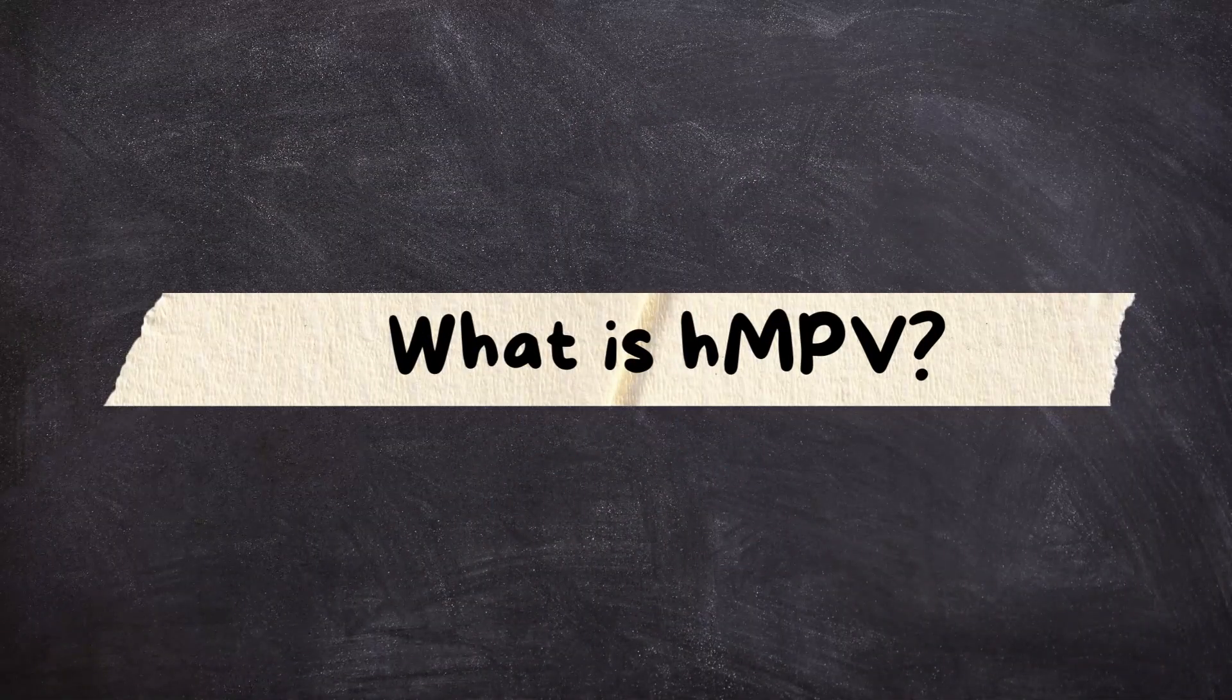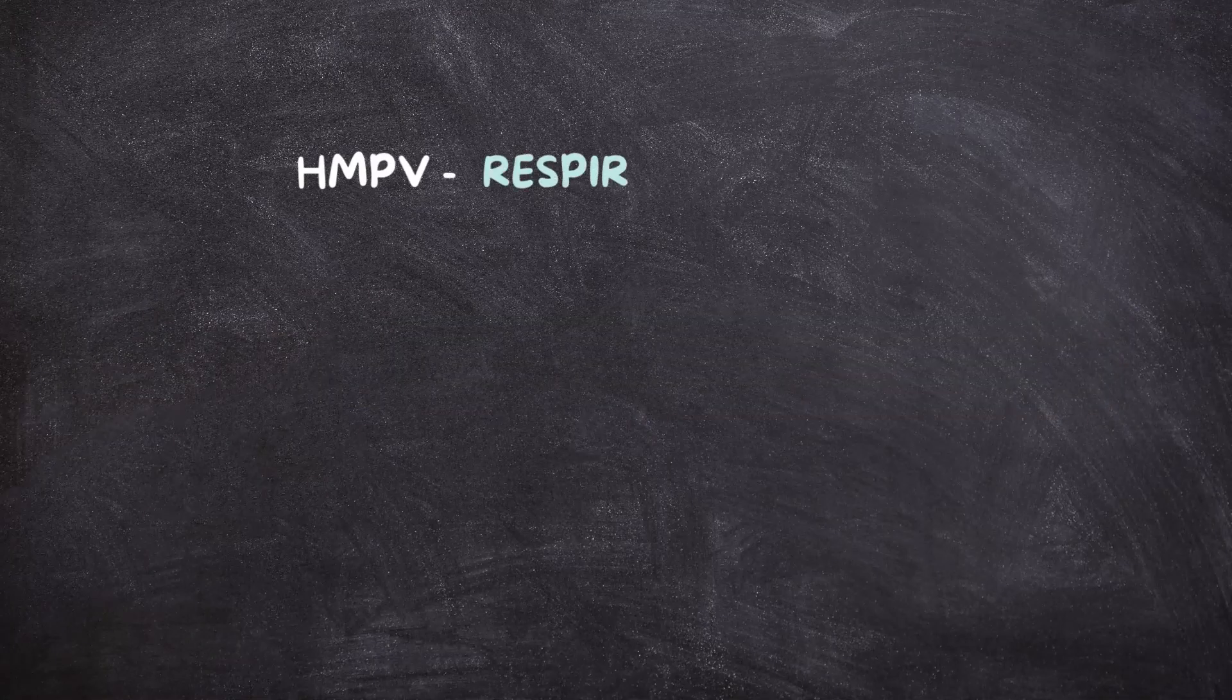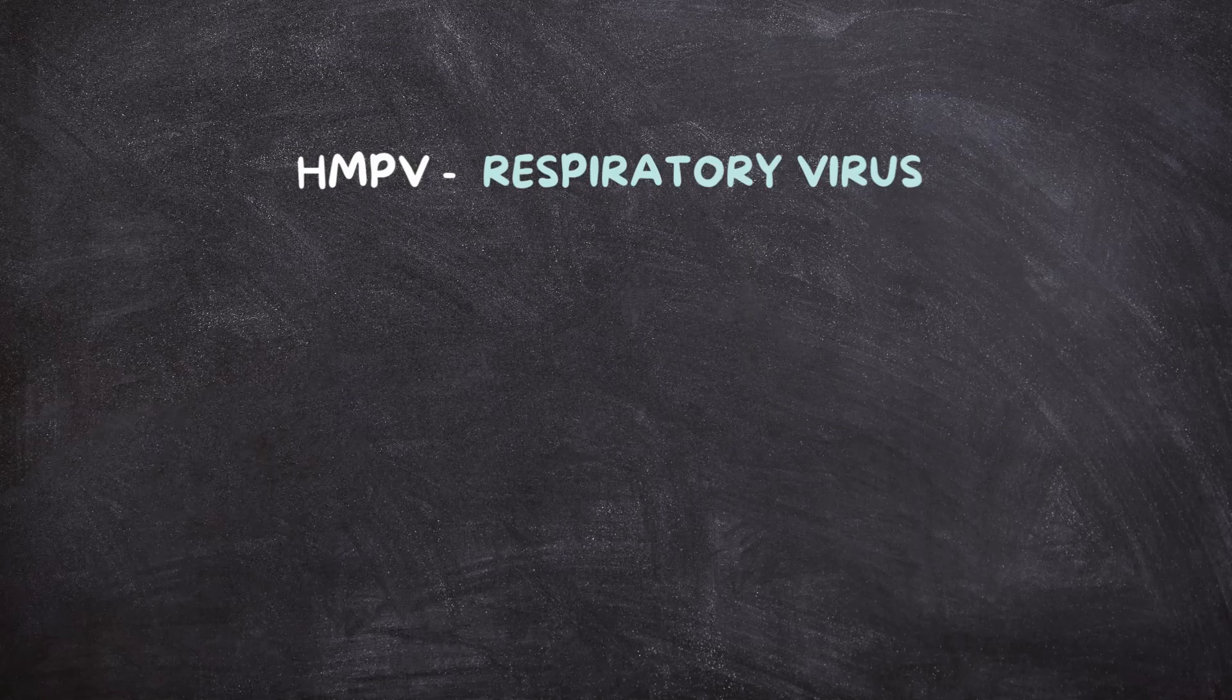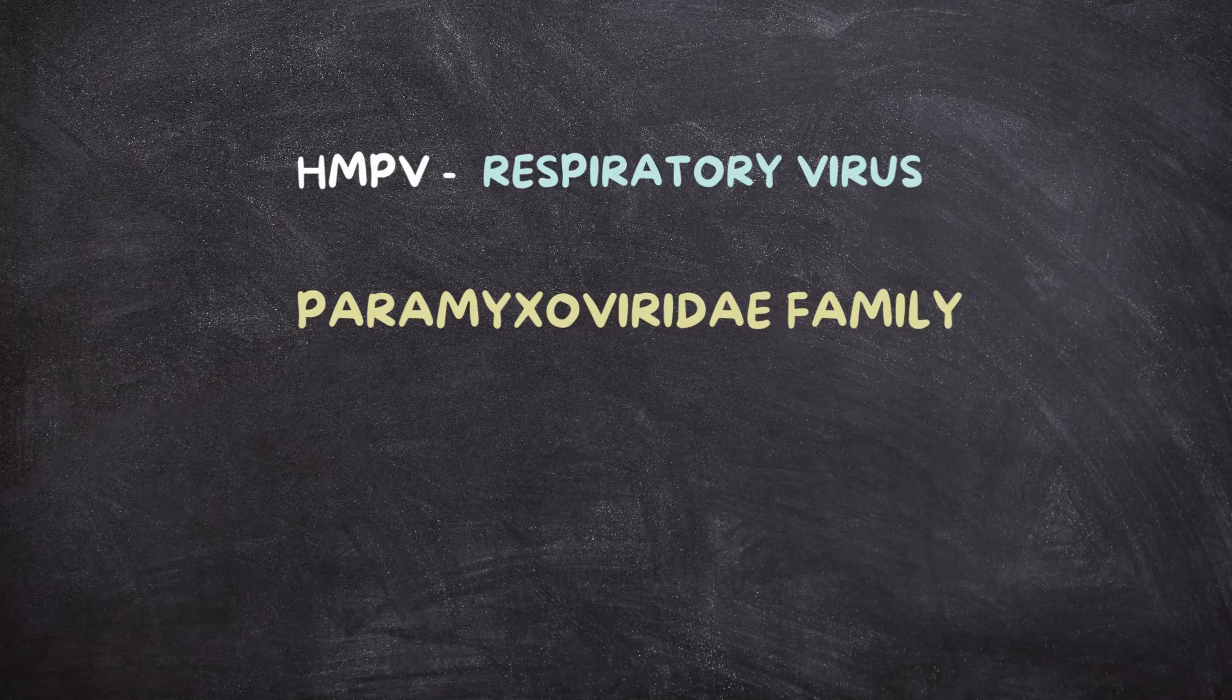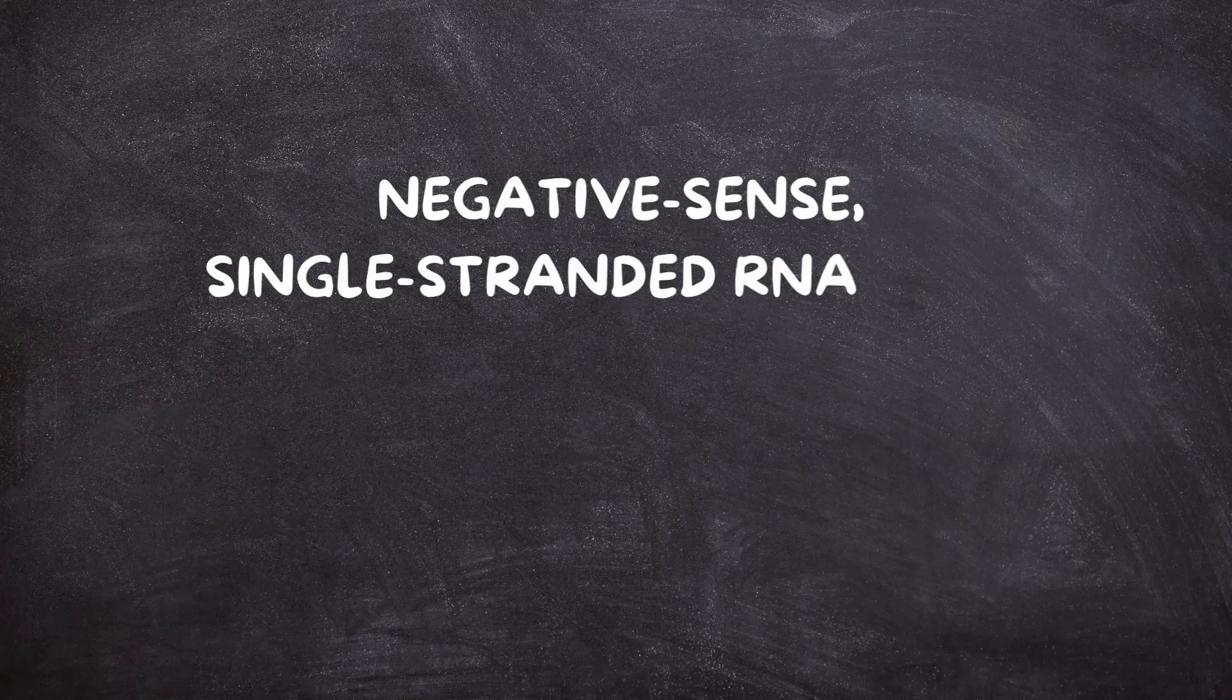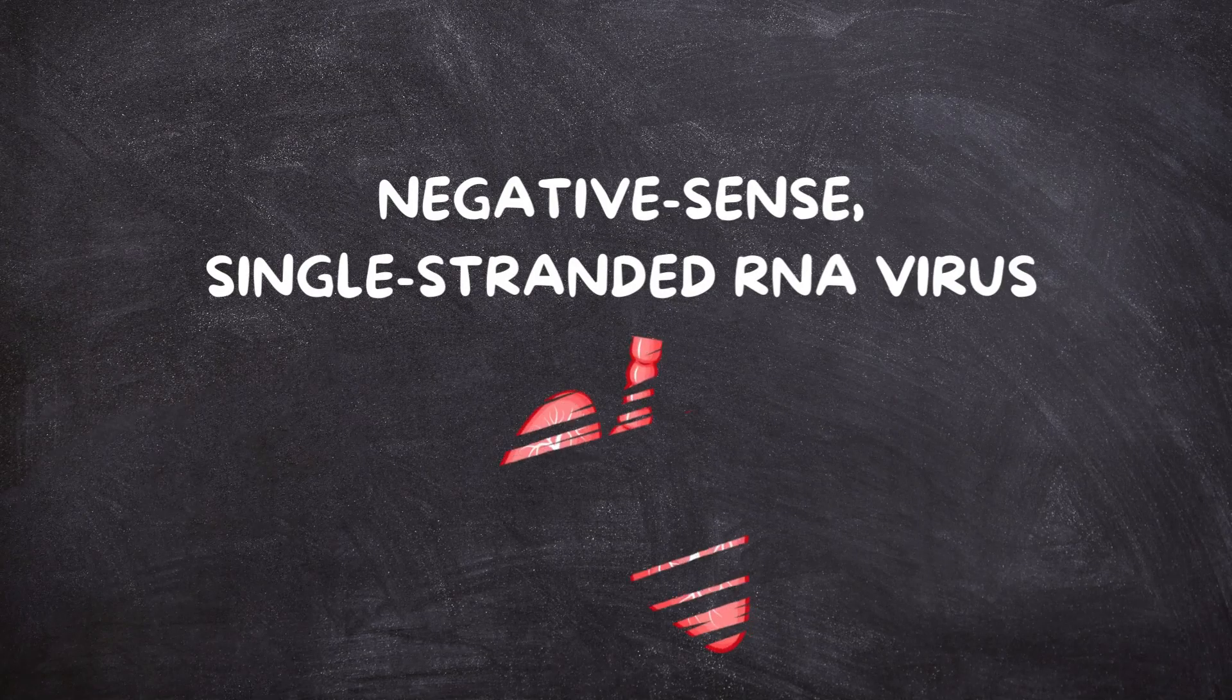What is HMPV? HMPV is a respiratory virus first identified in 2001. It belongs to the Paramyxoviridae family, the same family as RSV. It's a negative-sense, single-stranded RNA virus that targets the respiratory system.